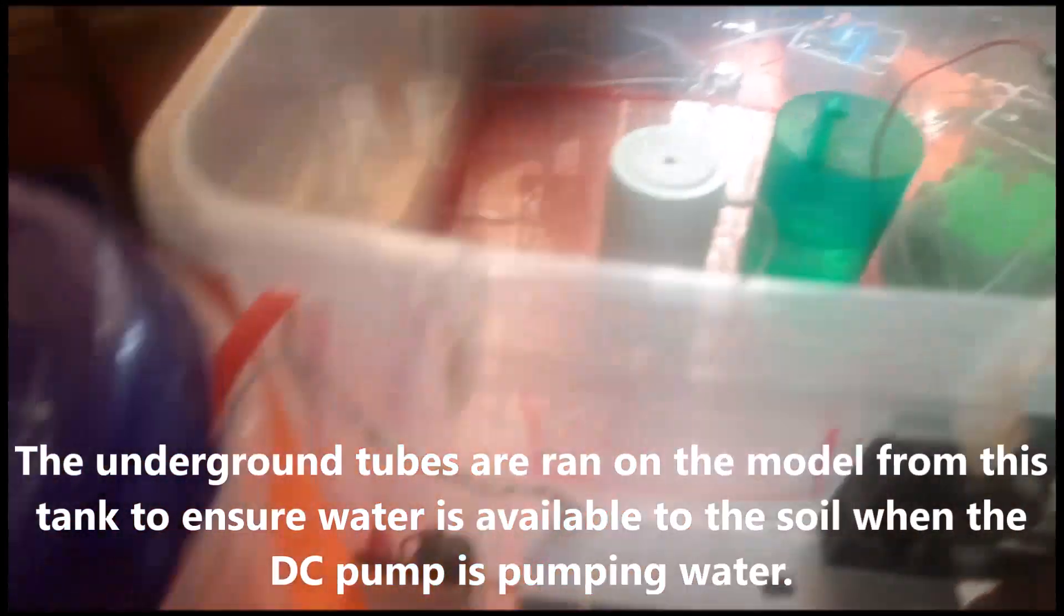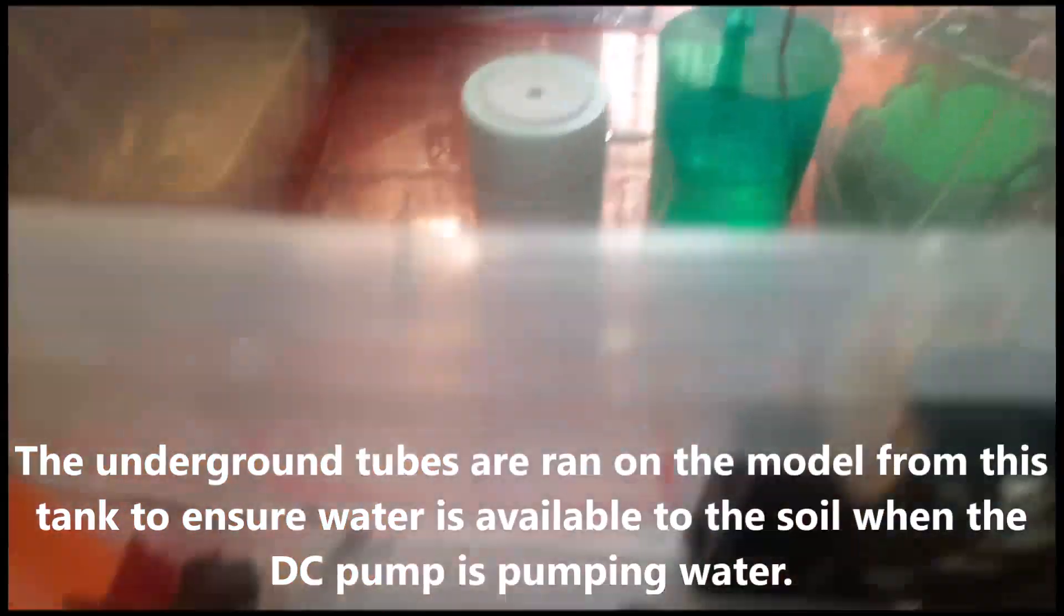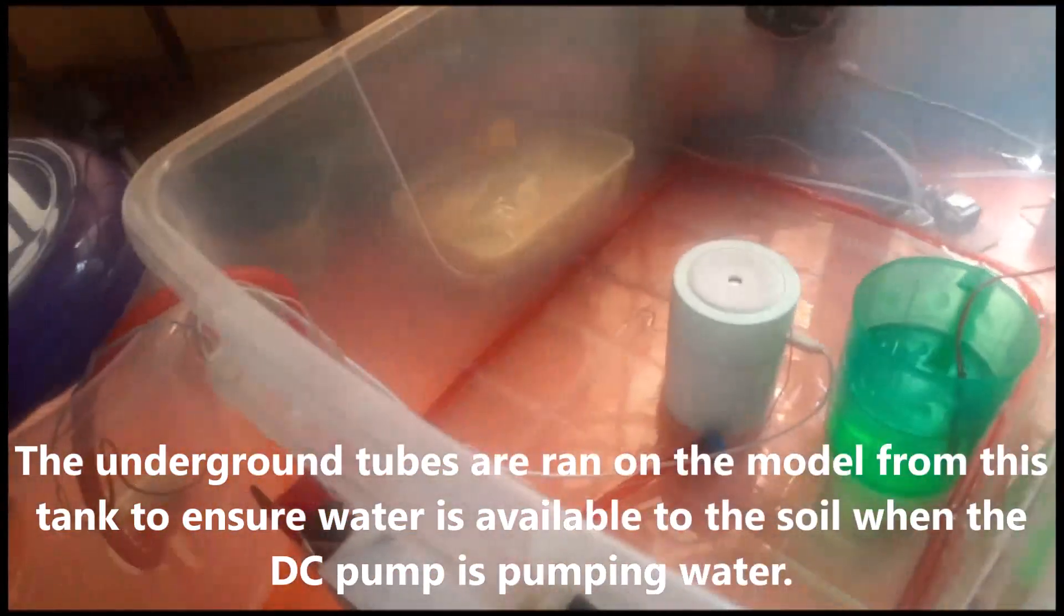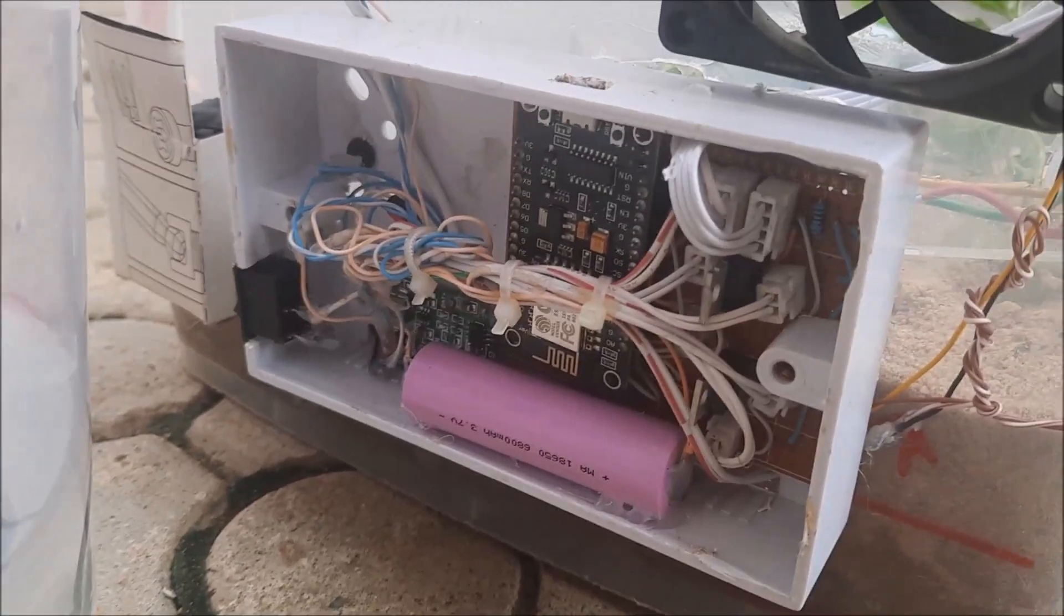We used a plastic container to serve as a reservoir tank. The underground tubes are run on the model from this tank to ensure water is available to the soil when the DC pump is pumping water.